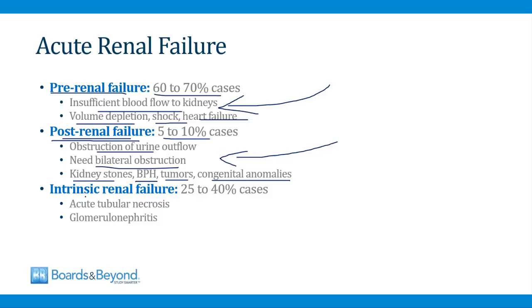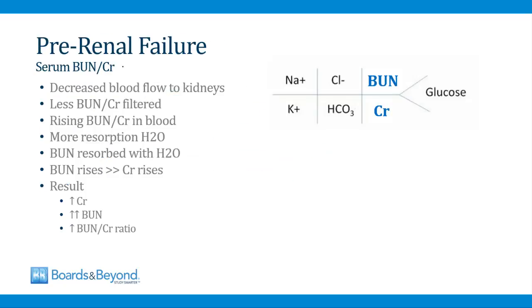In the middle, in terms of frequency, is intrinsic renal failure — a little less than half of cases. This refers to things that involve the kidney itself, such as acute tubular necrosis and glomerulonephritis. In intrinsic renal failure, there's some disease process of the kidneys themselves causing the BUN and creatinine to rise. We'll talk about how to identify the three different types of acute renal failure by going through each one at a time, starting with pre-renal failure.